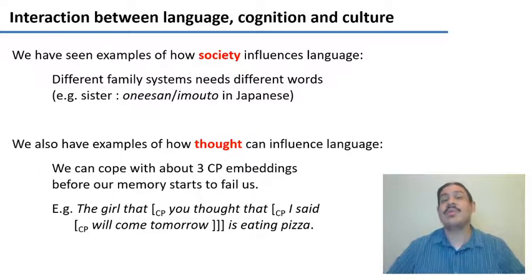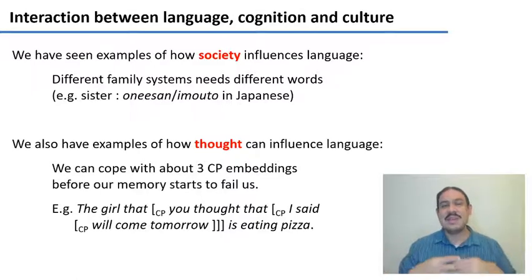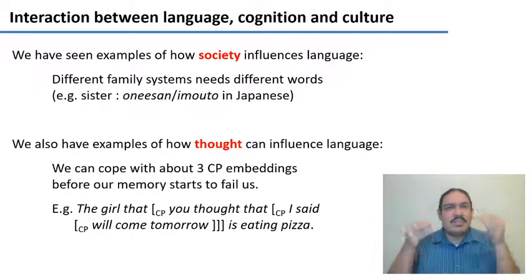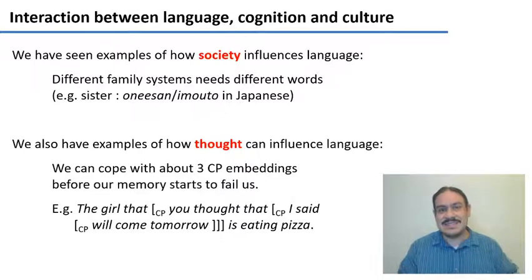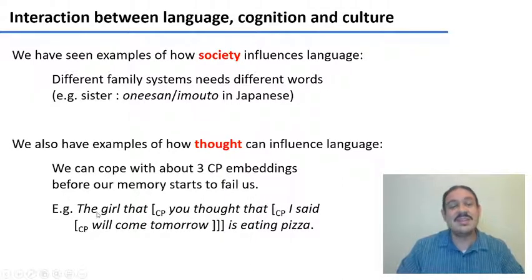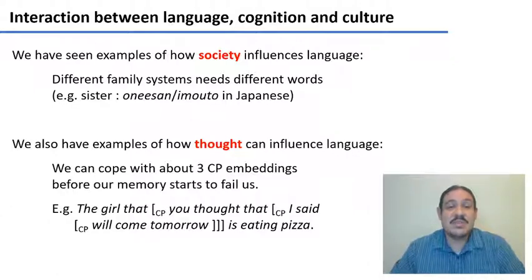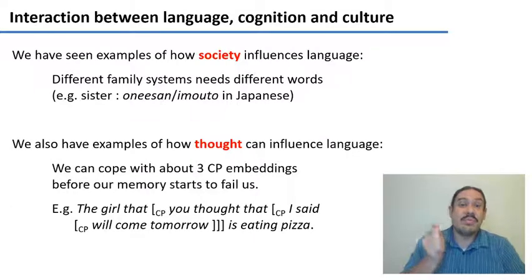We've also seen examples of how thought or general human cognition can influence language. For example, the syntax of English could create an infinitely long sentence, but there's no way you could remember an infinitely long sentence. The limit of your human memory is probably about three CP embeddings, like in the sentence: 'The girl that you thought that I said will come tomorrow is eating pizza' — difficult to understand not because it's a strange English sentence, but because your memory cannot cope with all those embeddings.